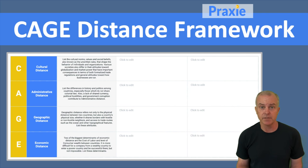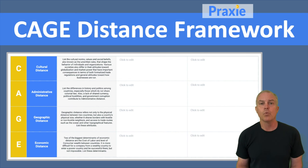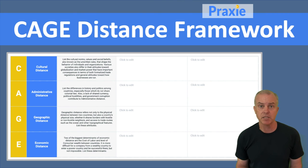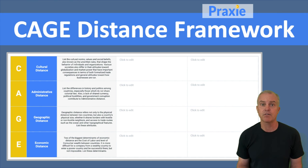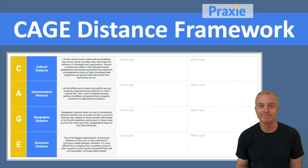And finally, economics — the cost of labor, consumer spending power, and other factors. When you're doing an analysis of your international expansion plans, use the CAGE Distance Framework to figure out which countries represent the biggest opportunities and the greatest synergies for you.